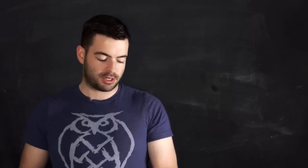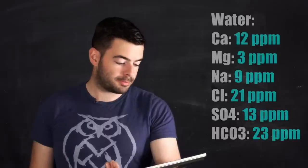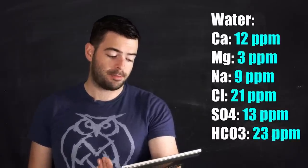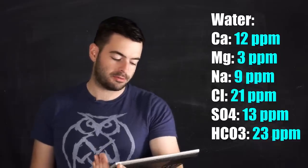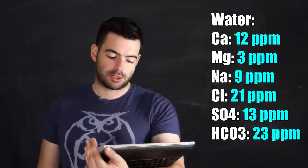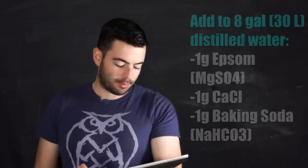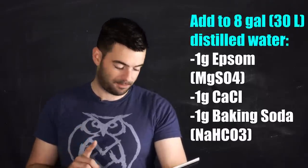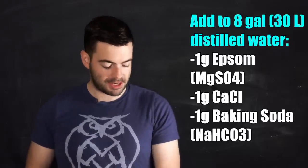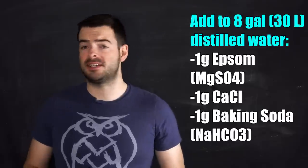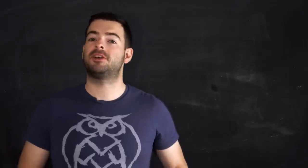So this water profile is actually a little bit more minerally than most Czech Pilsner water profiles are. And the reason why is because I just need to have a little bit of calcium in there because otherwise we could have some serious issues with mash efficiency. So the water profile I'm using is 12 parts per million of calcium, 3 parts per million of magnesium, 9 parts per million of sodium, 21 parts per million of chloride, 13 parts per million of sulfate, and 23 parts per million of bicarbonate. And in order to get that water profile, all I'm adding is 1 gram each of Epsom, calcium chloride, and baking soda. Even though it did add a few salts to the whole thing, it really is not a very minerally water profile. And it is among the lightest, softest water profiles that I've ever used in a beer.